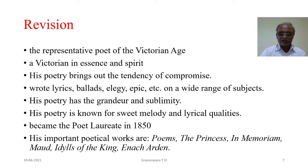Dear students, let us recall what we have learnt in this session. Alfred Lord Tennyson is the representative poet of the Victorian age; he was a Victorian in essence and spirit. His poetry brings out the tendency of compromise between democracy and aristocracy, hope and doubt, religion and science, old and new, and evolution and revolution. Tennyson wrote lyrics, ballads, elegy, epic, and more on a wide range of subjects. Like Milton and Wordsworth, his poetry has grandeur and sublimity. Tennyson's poetry is known for sweet melody and lyrical qualities, and he became the poet laureate in 1850.